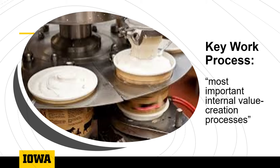Key work processes are your unit's most important internal value creation processes. This is not a list of everything you do — notice the word 'key' here. Rather, it's those things that are essential to your success. For example, if your unit makes ice cream, a key work process would be the packaging of the ice cream into suitable containers.